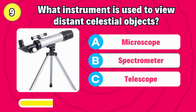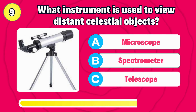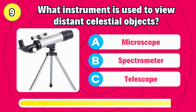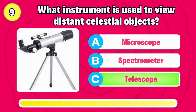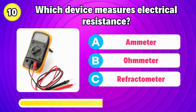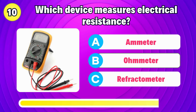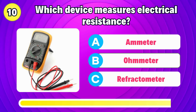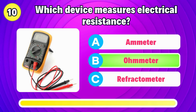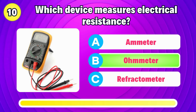What instrument is used to view distant celestial objects? The answer is telescope. Which device measures electrical resistance? The correct answer is ohmmeter.